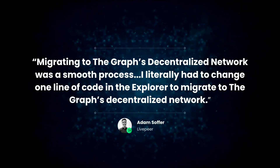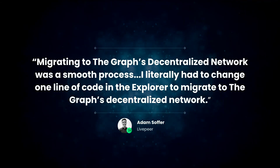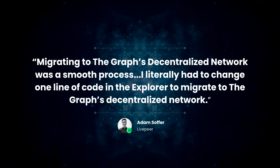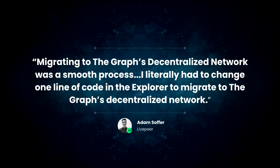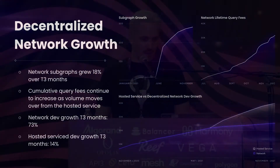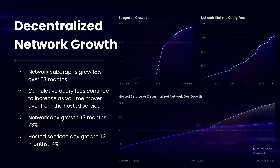There are already some projects that migrated to the decentralized network — for example Livepeer. Adam from Livepeer said it was a really smooth process. In the end, when you walk through all the steps, you just need to switch one line of code and switch the endpoint from the hosted service to the decentralized network. The network is growing — network subgraphs are up over 18% over the last three months, and query fees keep going up.